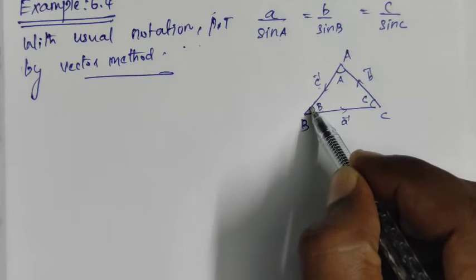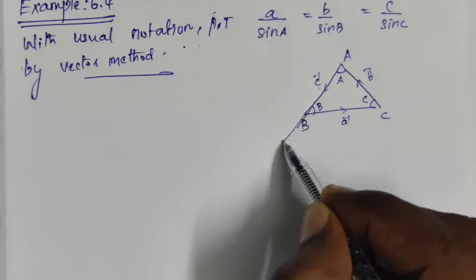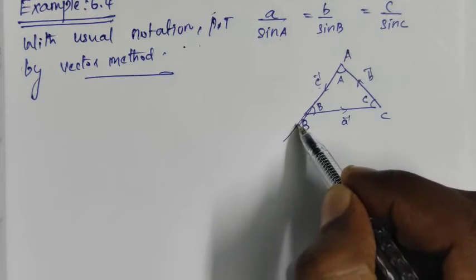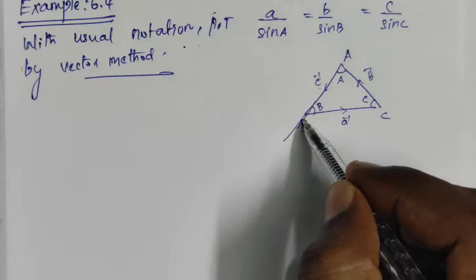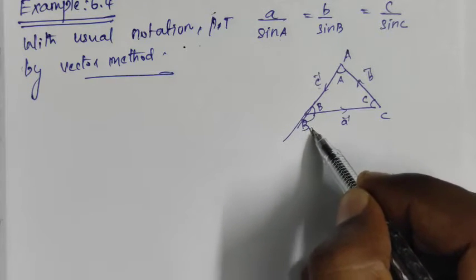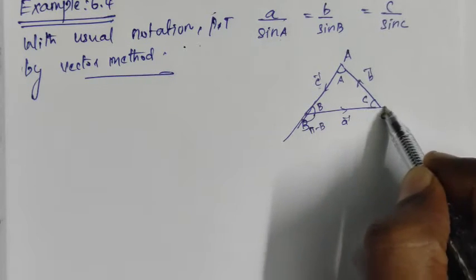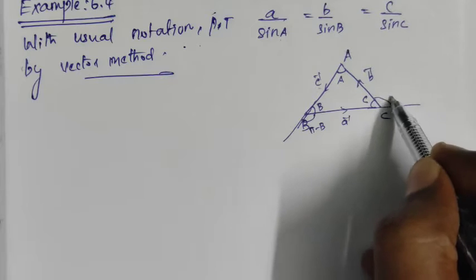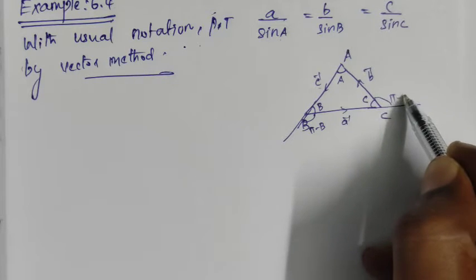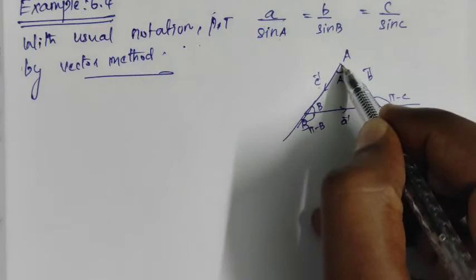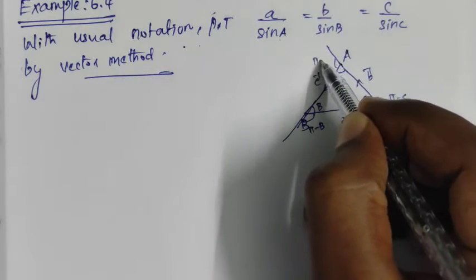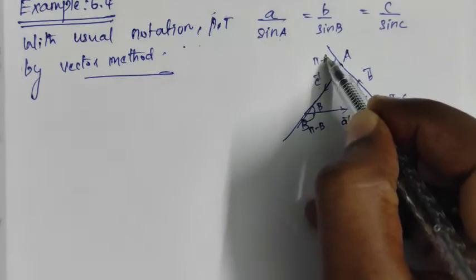So if we label the exterior angles, this one is π minus B, this is the exterior angle π minus B, this is the exterior angle π minus C, and this is the exterior angle π minus A.